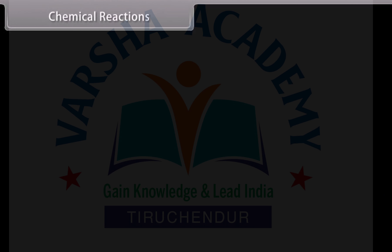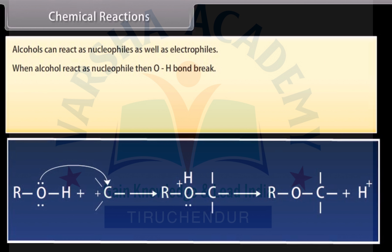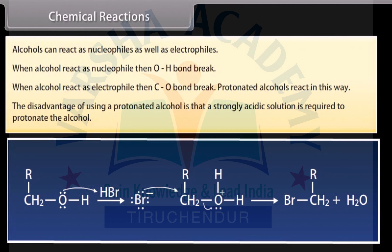Alcohols can react as nucleophiles as well as electrophiles. When alcohol reacts as a nucleophile, the O-H bond breaks. When alcohol reacts as an electrophile, the C-O bond breaks. Protonated alcohols react in this way, but the disadvantage of using a protonated alcohol is that a strongly acidic solution is required to protonate the alcohol.